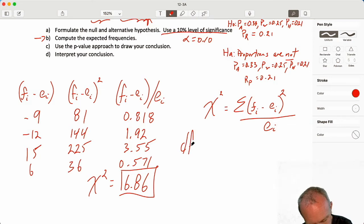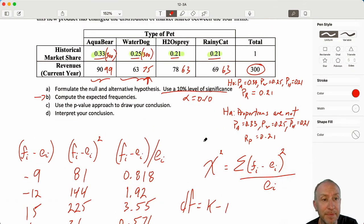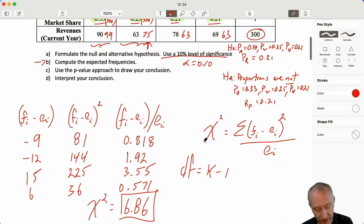So degrees of freedom, it's exactly what you're going to guess. This is going to be k minus 1. k is the number of categories that we have. And this time, I have four categories. So here are degrees of freedom, 4 minus 1. We have 3 degrees of freedom. We're doing this at the 10% level of significance.